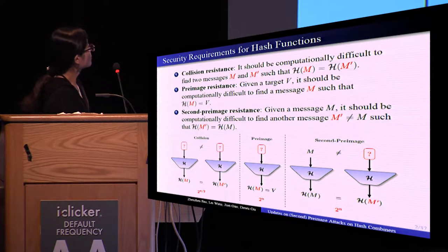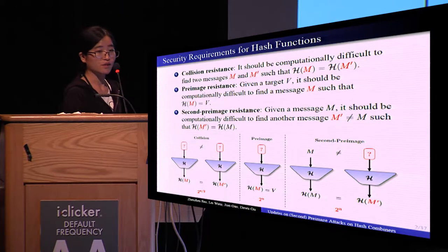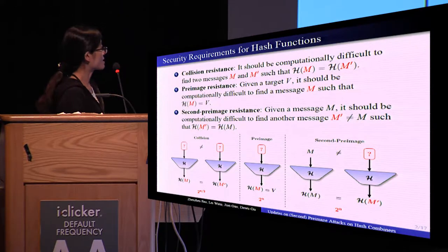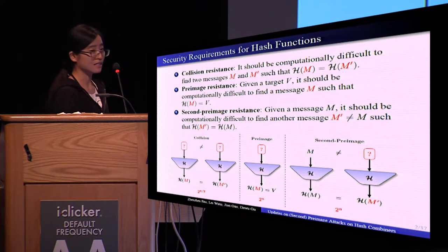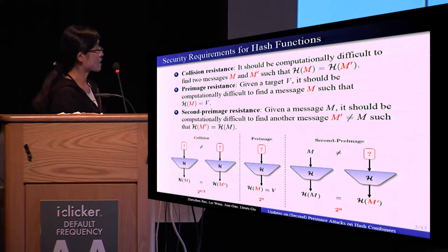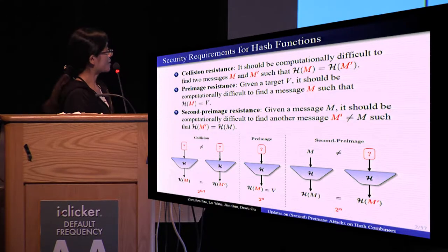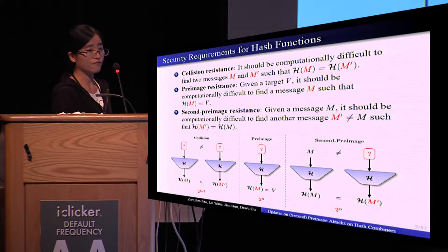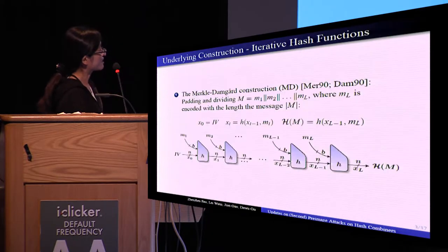For an ideal hash function, we expect the security for collision resistance to be 2^(n/2) because of the birthday attack, and 2^n for pre-image and second pre-image resistance.